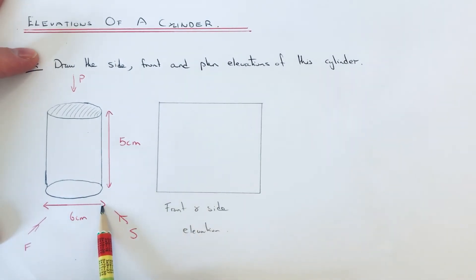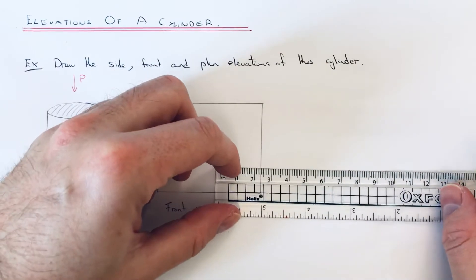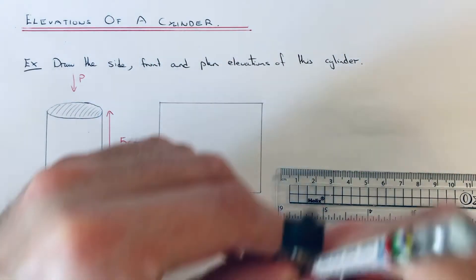It'll be a circle with a diameter of 6 or radius of 3. Get your compass and open it out to 3 centimeters.